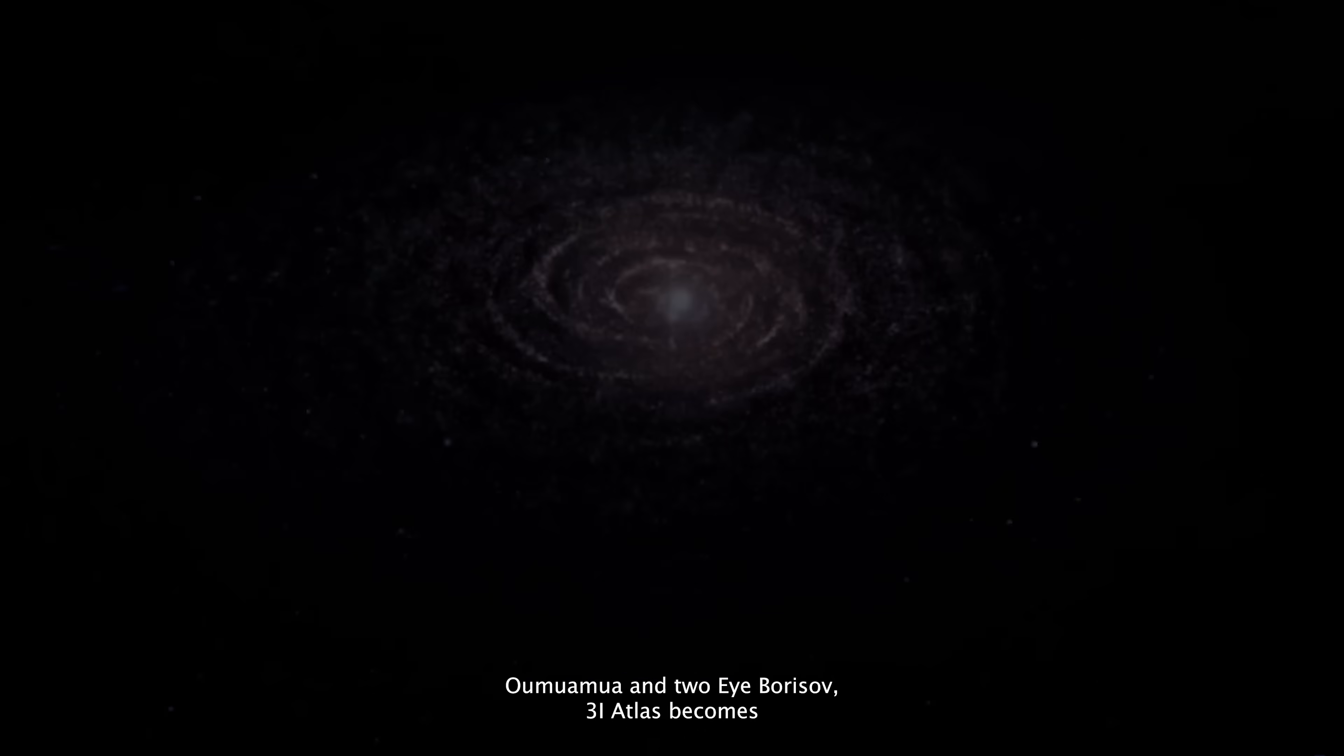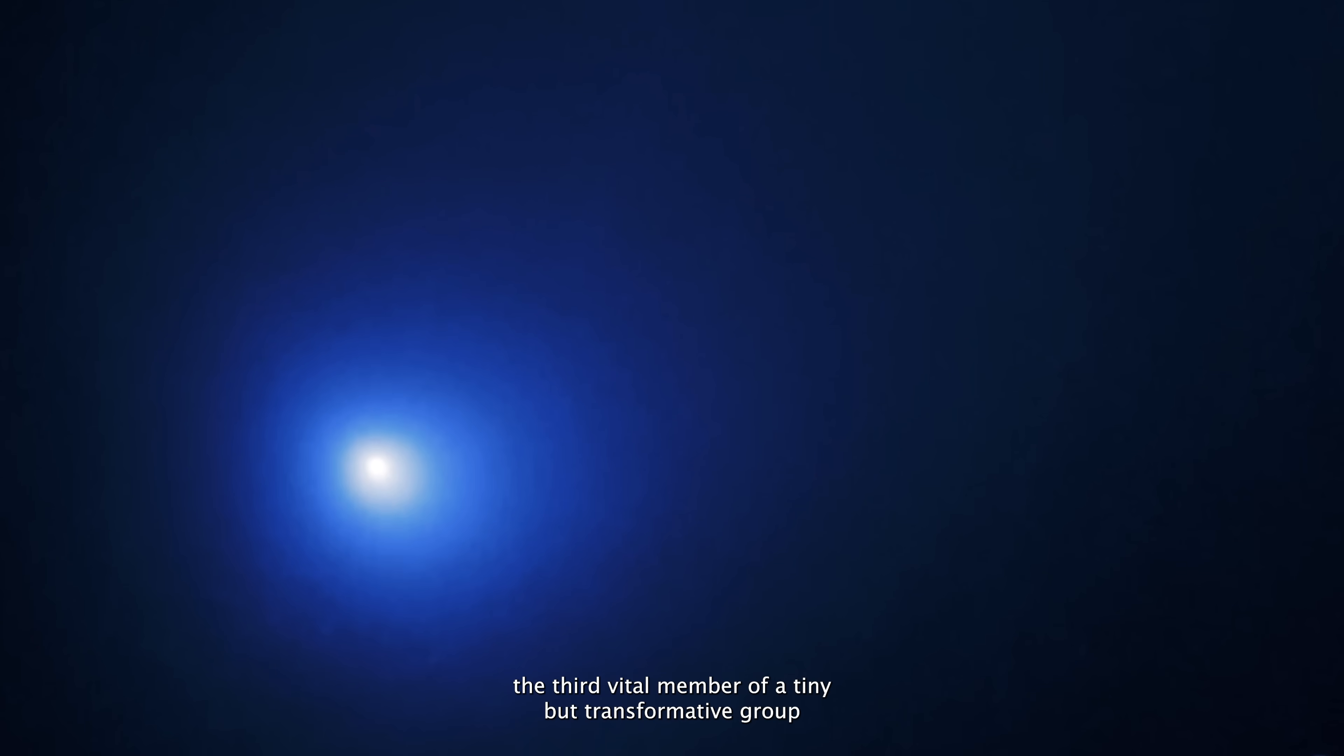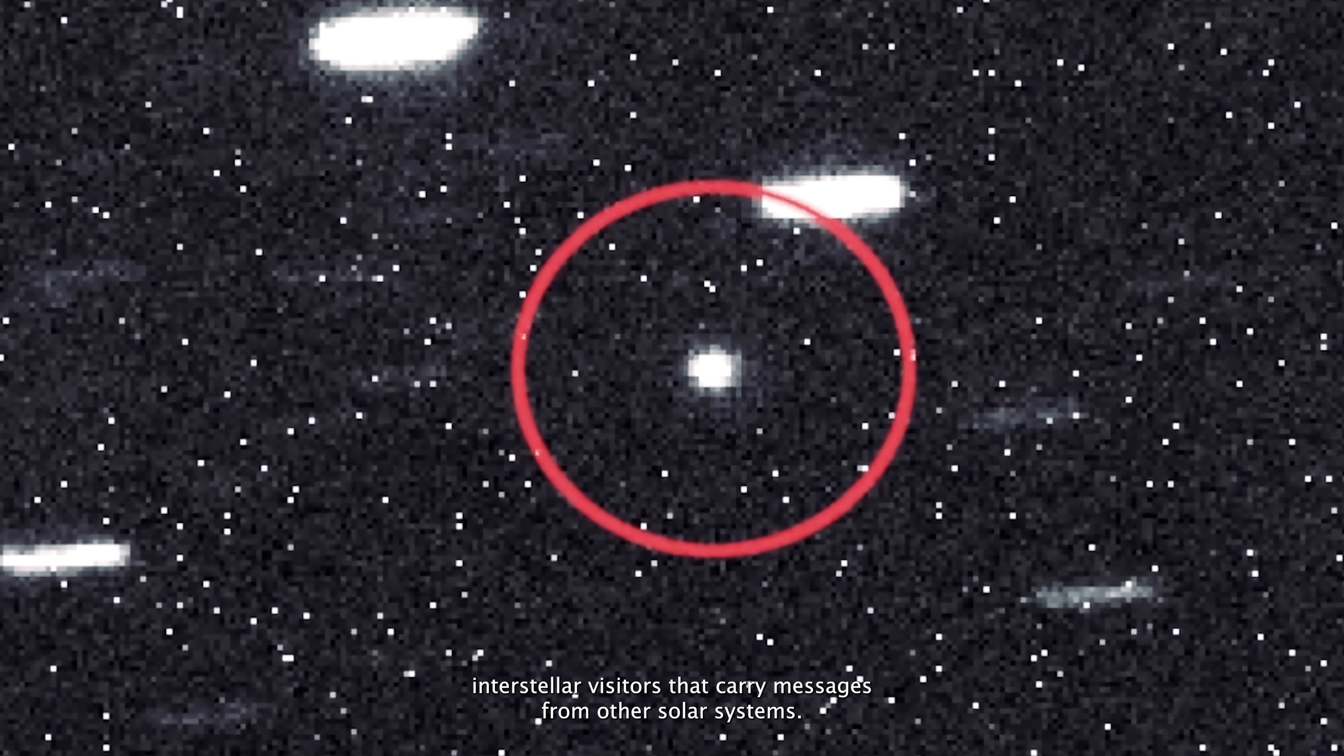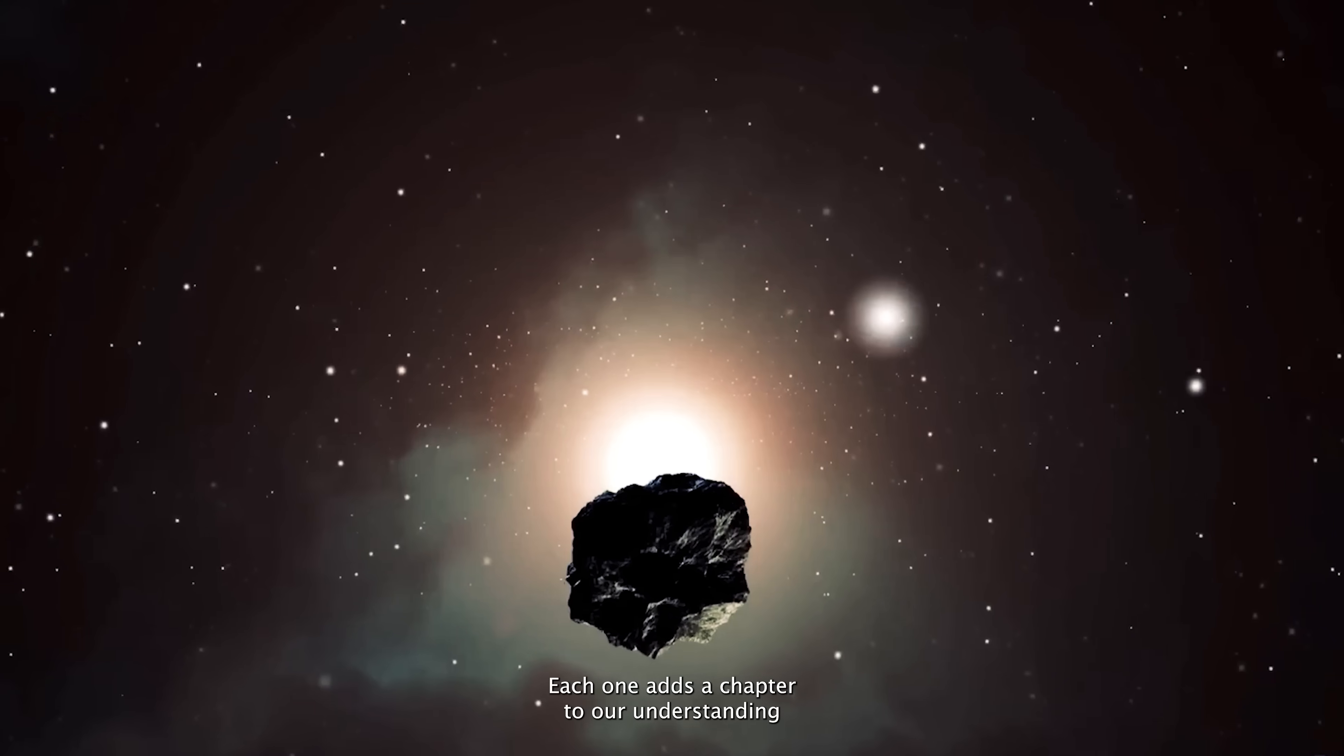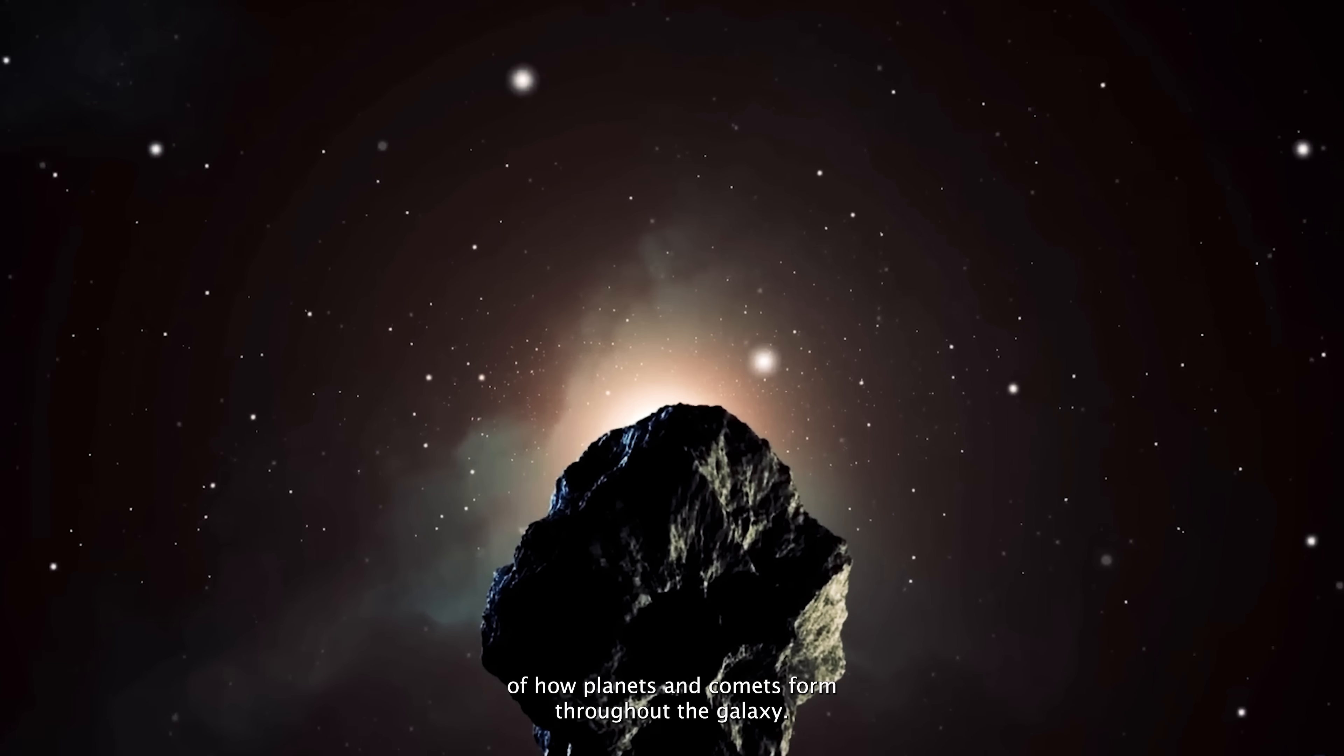Now, alongside Oumuamua and 2i Borisov, 3i Atlas becomes the third vital member of a tiny but transformative group: interstellar visitors that carry messages from other solar systems. Each one adds a chapter to our understanding of how planets and comets form throughout the galaxy.